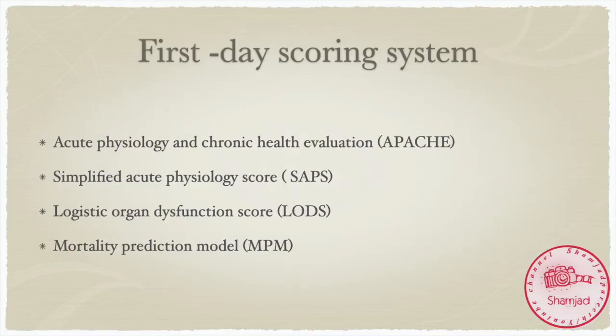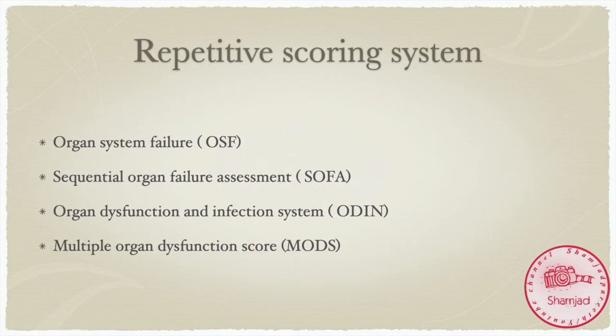Let us see the commonly used scoring systems in adults. For first-day scoring, these systems are used: Acute Physiology and Chronic Health Evaluation (APACHE), Simplified Acute Physiology Score (SAPS), Logistic Organ Dysfunction Score (LODS), and Mortality Prediction Model (MPM). For repetitive scoring, we use: Organ System Failure (OSF), Sequential Organ Failure Assessment (SOFA), Organ Dysfunction and Infection System (ODIS), and Multiple Organ Dysfunction Score (MODS).